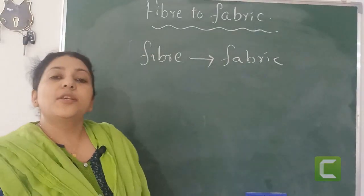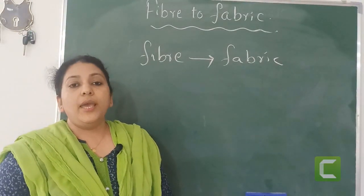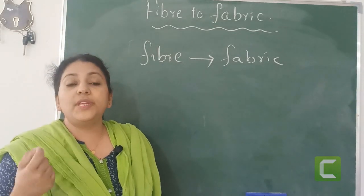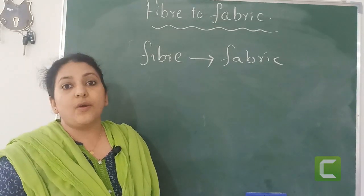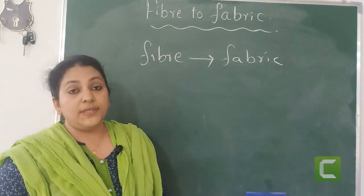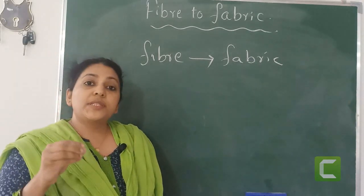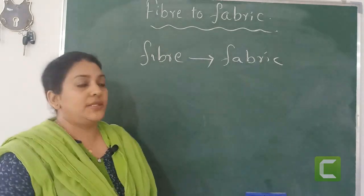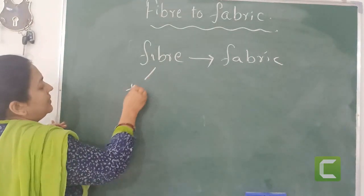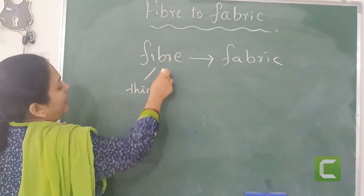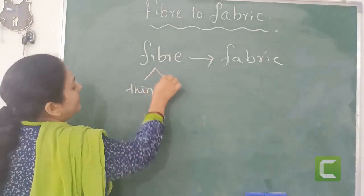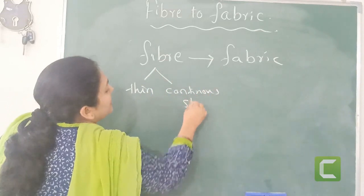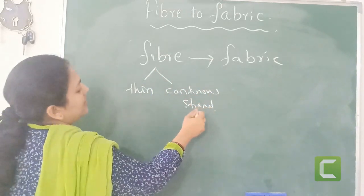What is a fiber? A material which is available in the form of thin and continuous strand is called fiber. So fiber is very thin and it is a continuous strand.